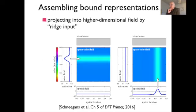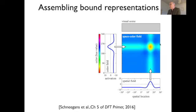You can also do the reverse: if you know the individual unbound features, you combine them. For instance, knowing blue and knowing a location could be inserted into the bound representation by ridge input — a boost localized along one dimension, boosting all activation variables along the other. If you combine two such boosts, you can create a bound representation only where these two boosts overlap, causing a detection instability only at the intersection of the ridges.